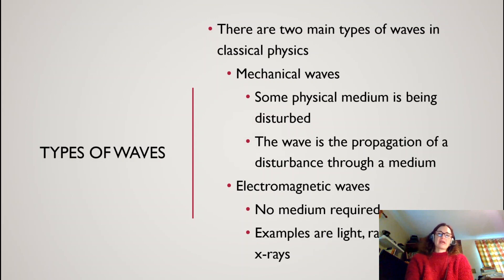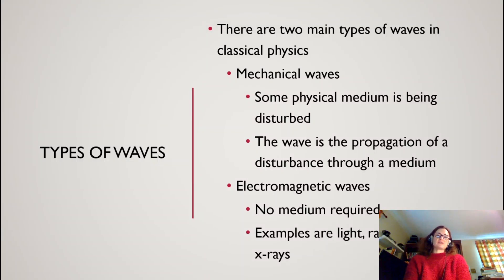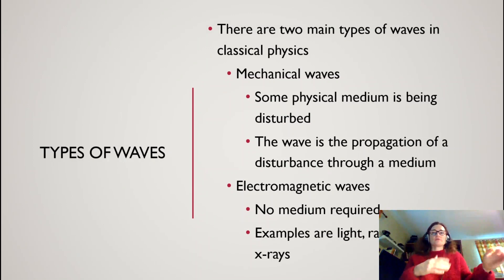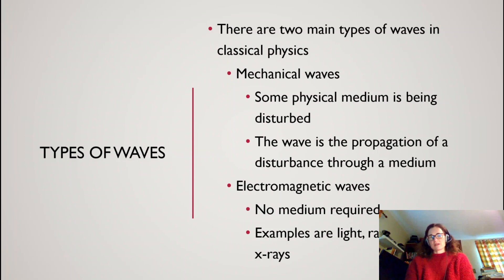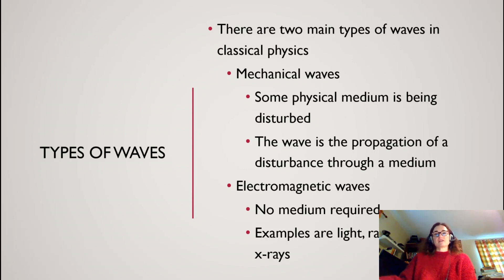The wave is the propagation of a disturbance through the medium. For example, sound waves are pressure waves, and if the sound is traveling through air then the air molecules themselves are being compressed and rarefied as it moves along. Electromagnetic waves are different — this is light, radio waves, x-rays, microwaves, and similar — they don't need a medium to propagate, and what they are is oscillations of electromagnetic fields as they move through space.